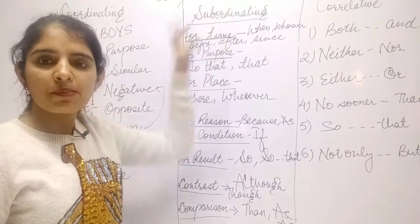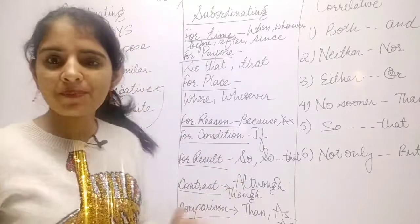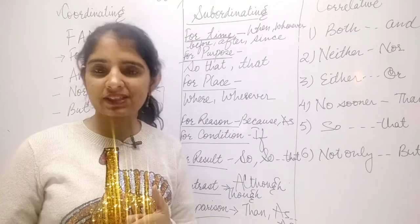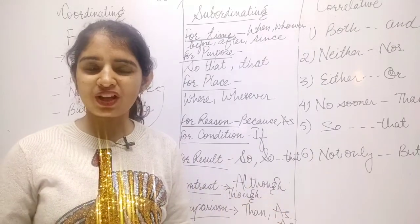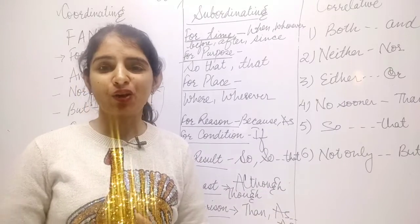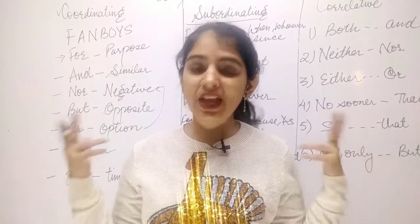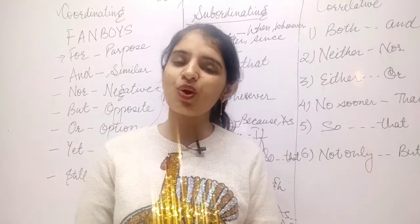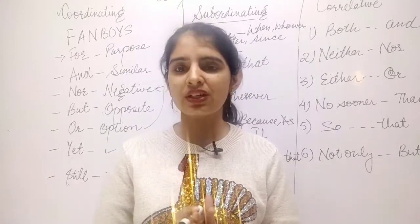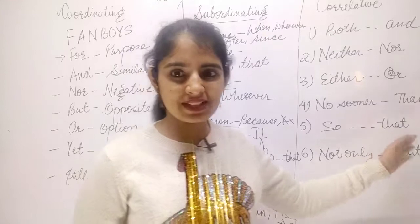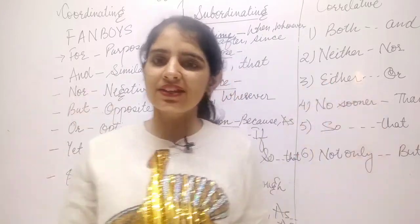So to summarize: subordinating conjunctions join an independent sentence and a dependent sentence; coordinating conjunctions join independent sentences, using the simple FANBOYS; and correlative conjunctions come in pairs. I hope you understand. Focus on subordinating, coordinating, and correlative conjunctions. Thank you, bye bye, take care.